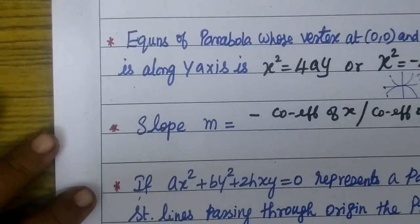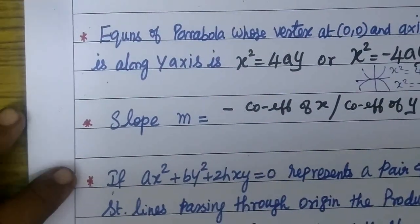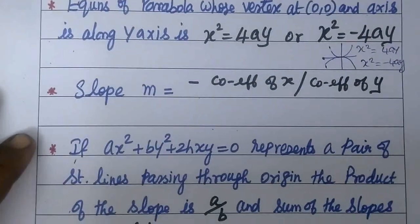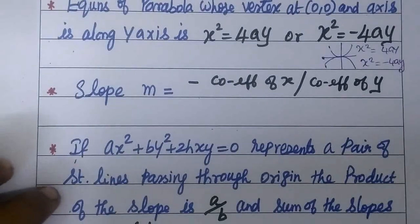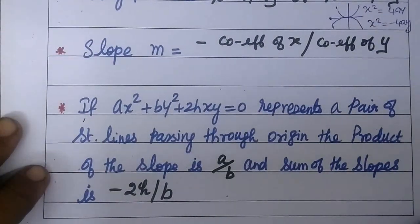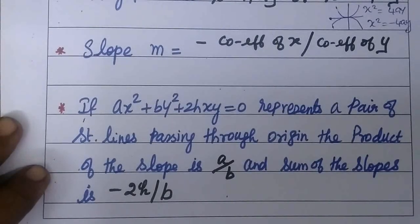Then the slope formula: m equal to minus (x coefficient) divided by (y coefficient). This is a well-known formula. And ax squared plus 2hxy plus by squared equal to 0 represents a pair of straight lines passing through the origin.